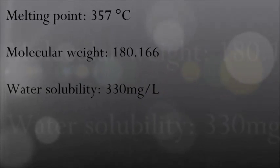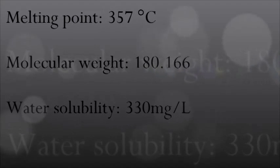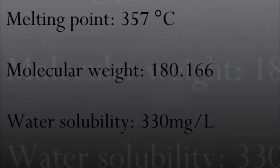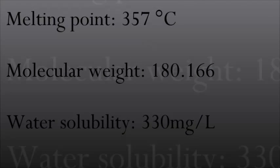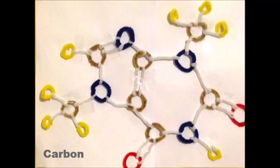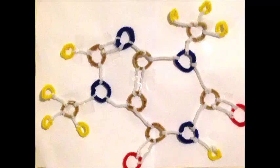So what are the chemical properties? Well, it's got a melting point of 357 degrees Celsius, a molecular weight of 180.166, and a slight water solubility of 330 milligrams per liter. Now the chemical formula of theobromine is C7, H8, N4, and O2. This chemical structure has seven grey carbon atoms, eight yellow hydrogen atoms, four blue nitrogen atoms, and two red oxygen atoms.